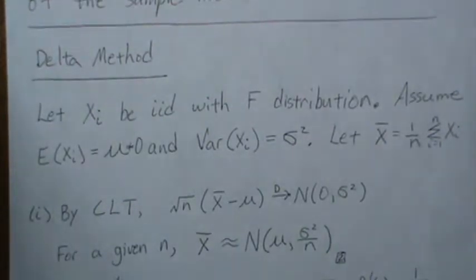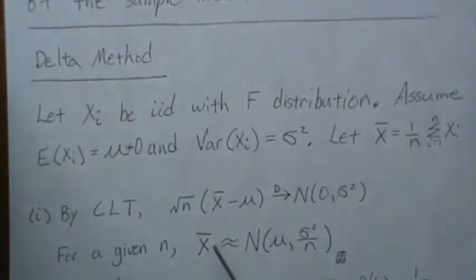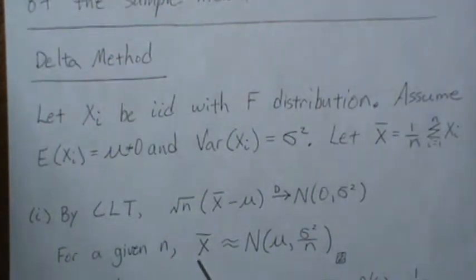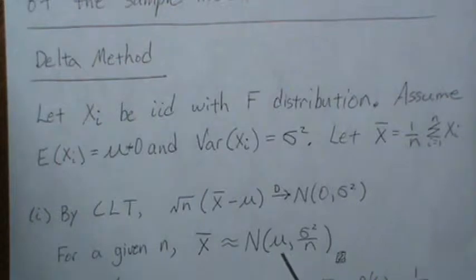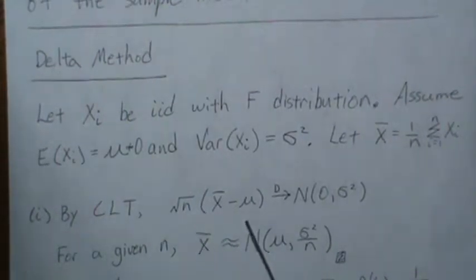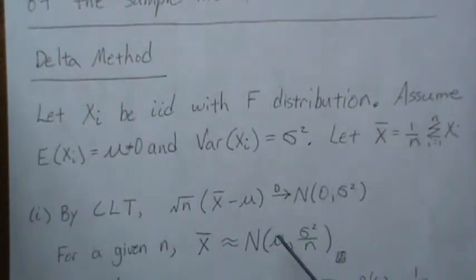For a given N, as N gets bigger and bigger it gets closer and closer to this normal distribution. At some point you stop. So for a given N, X-bar is approximately distributed as normal with mean mu and variance sigma squared over N. You get that by dividing the sqrt(N) over — that's where the N comes in — and then adding mu to both sides. So for a given N, this is the approximate distribution.